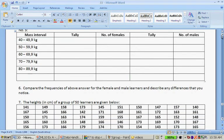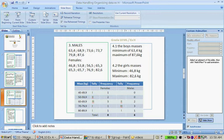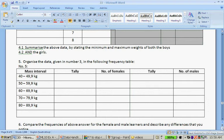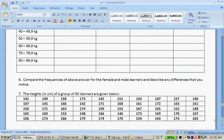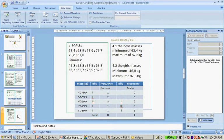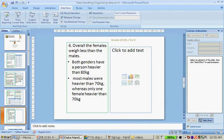Compare the frequencies of above. The boys mass, the minimum was 63.4 and maximum was 87.6. And the girls, the minimum was 46.8 and 82.6. The females weigh less than the males. Both genders have a person heavier than 80 kilograms. Most males were heavier than 70 kilograms, whereas only one female was heavier than 70 kilograms.